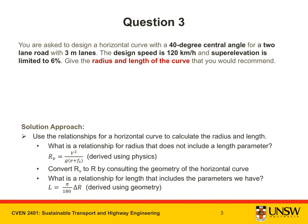In black we can see the parameters relevant to this problem and in red we can see the question. Our solution approach is to use the relationships for a horizontal curve to calculate the radius and length. We can use this equation for the radius to the center of the innermost lane.